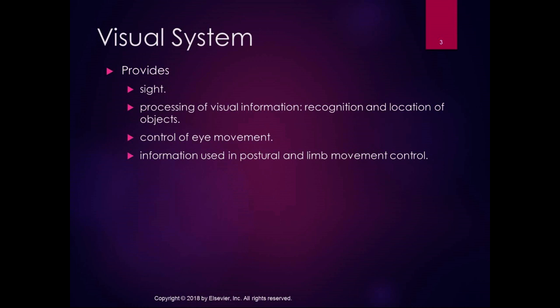The visual system does four things: it provides sight, it provides processing of visual information including recognition and location of objects, it provides control of eye movement, and it provides information used in postural and limb movement control. The visual system contributes a lot of sensory information to balance and to movement.